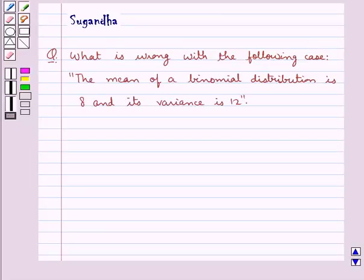Hello and welcome to the session. In this session we discuss the following question: What is wrong with the following case? The mean of a binomial distribution is 8 and its variance is 12.